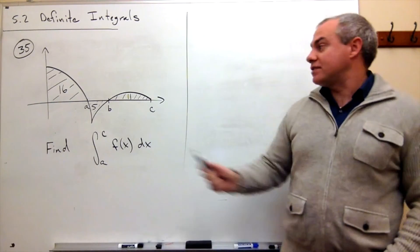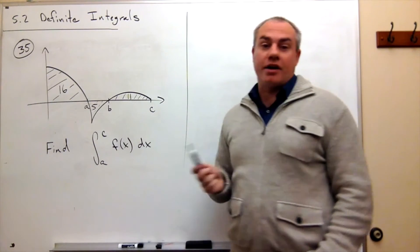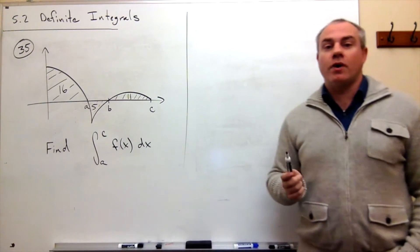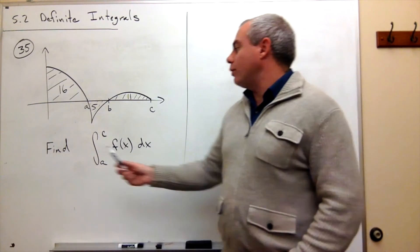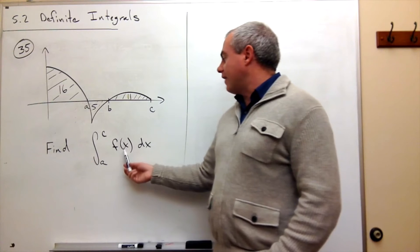So we have 16 area here, 5 here, 11 here. The question asks: what if we wanted to find the integral from a to c of f(x)dx?